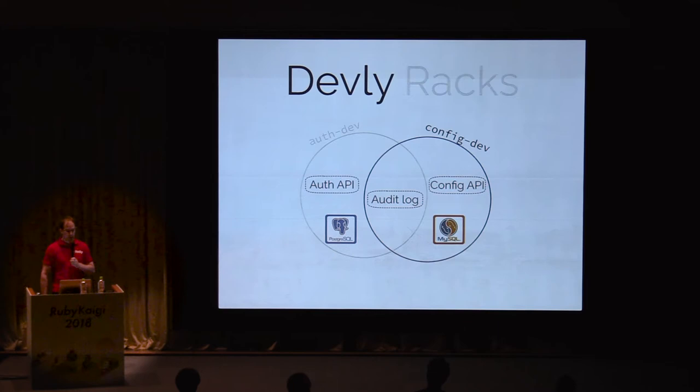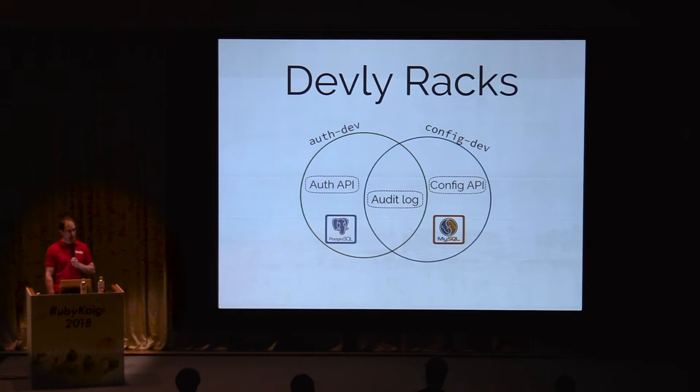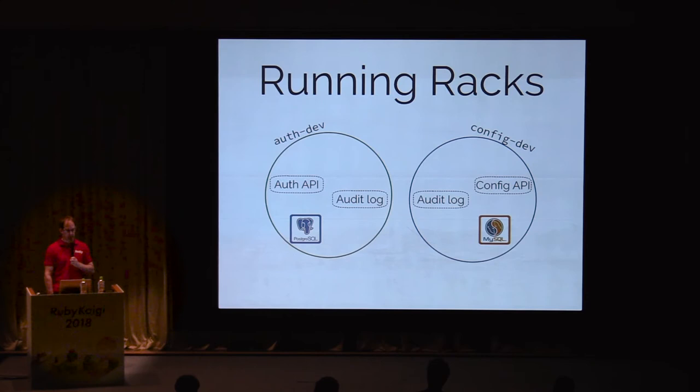Devly allows you to configure multiple racks. The authentication team needs to work on its services, which include the Postgres database and the authentication API. The authentication development rack also uses the audit log service, just like the configuration team. When we start these racks, we use independent containers to run their services. This allows the teams to have different configurations and software versions for the audit log service that won't collide with each other. For example, you can start up both racks at the same time to isolate bugs that span multiple services. Using common configuration to replicate services across teams makes sharing your work easier.